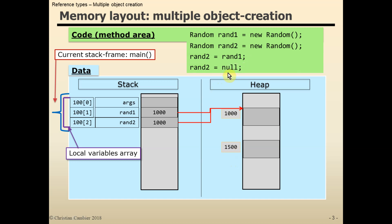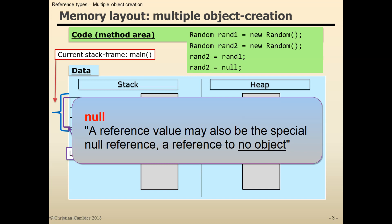The last statement assigns null to rand2. First of all, what is null? Well, it is a Java keyword about which the Java specification says the following: A reference value may also be the special null reference, a reference to no object.